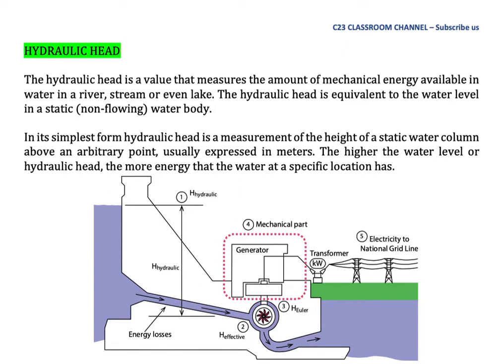The hydraulic head is a value that measures the amount of mechanical energy available in water in a river, stream, or even lake. The hydraulic head is equivalent to the water level in a static water body. In its simplest form, hydraulic head is a measurement of the head of a static water column above an arbitrary point, usually expressed in meters. The higher the water level or hydraulic head, the more energy that the water at a specific location has.